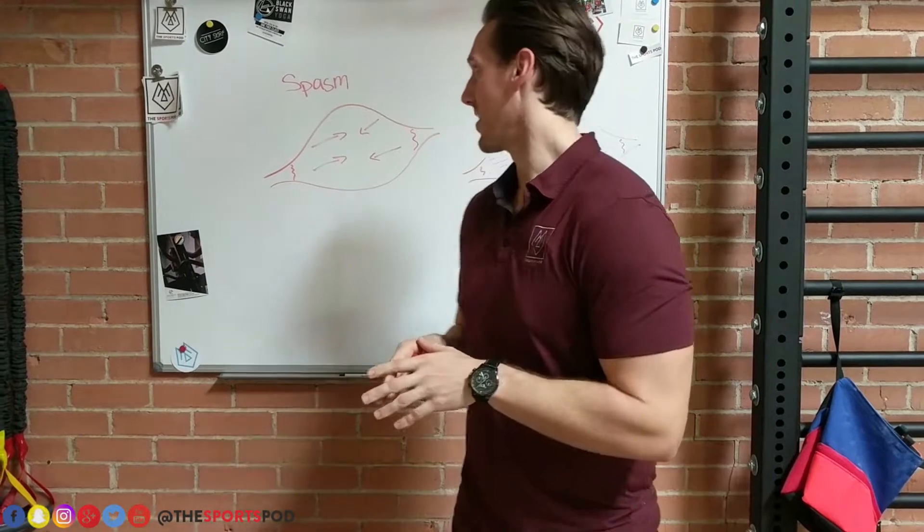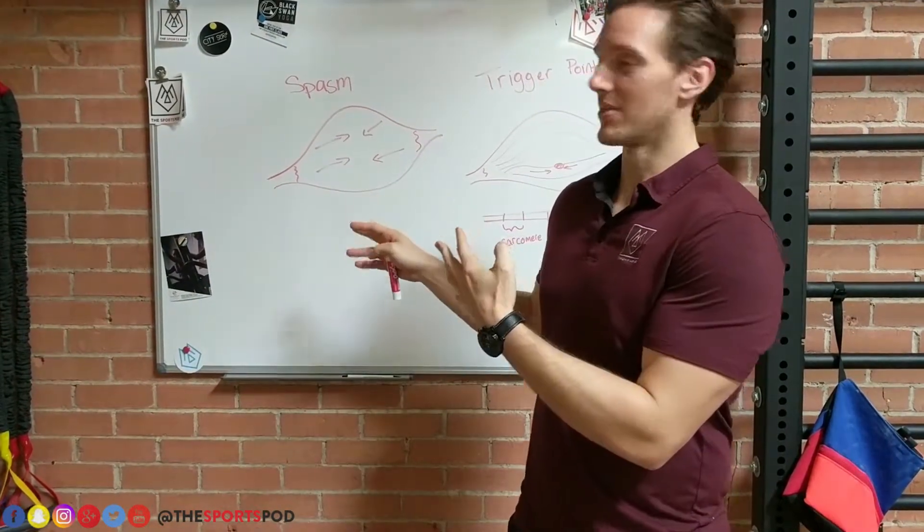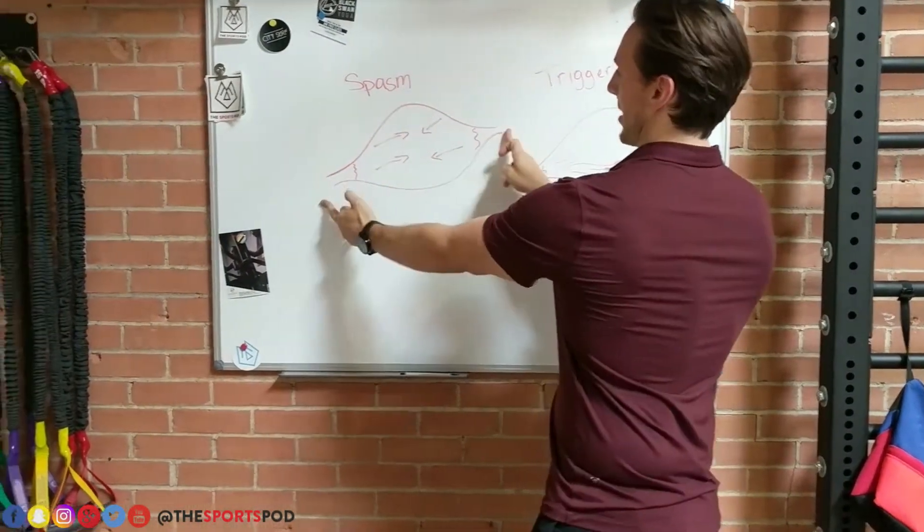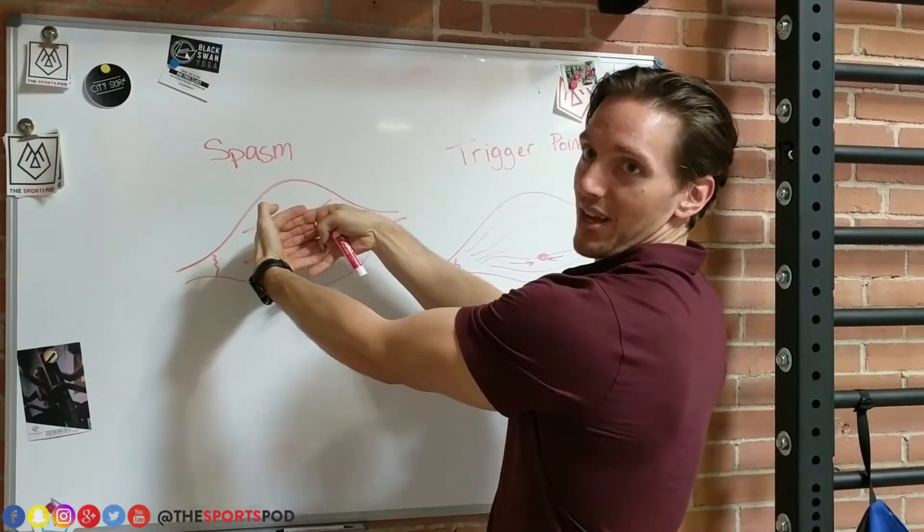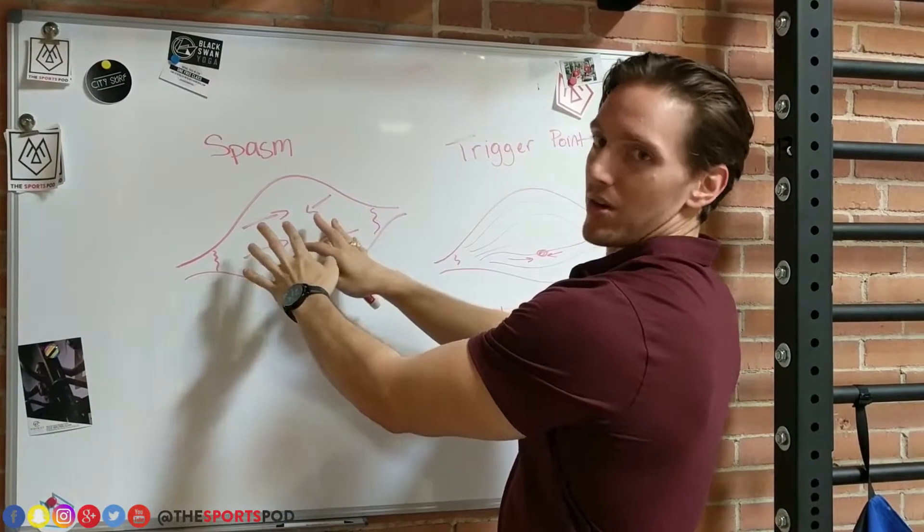So first we're going to talk about what it is. It's not a muscle spasm. This is our muscle here. We've got the two attachments, and a muscle spasm is when the entire muscle contracts up really tight. Not a trigger point.